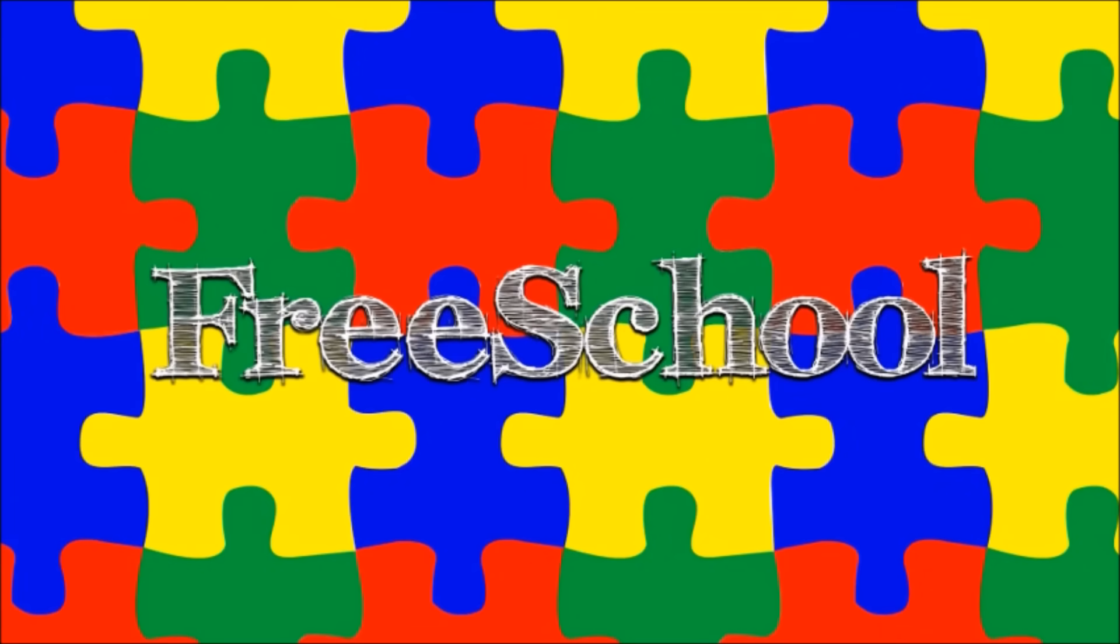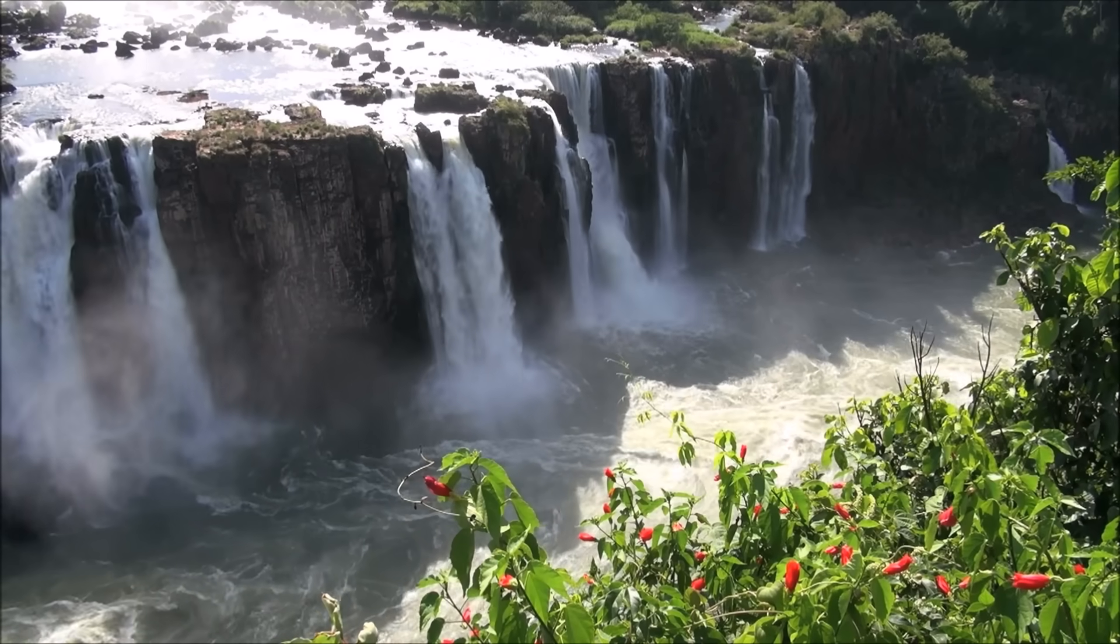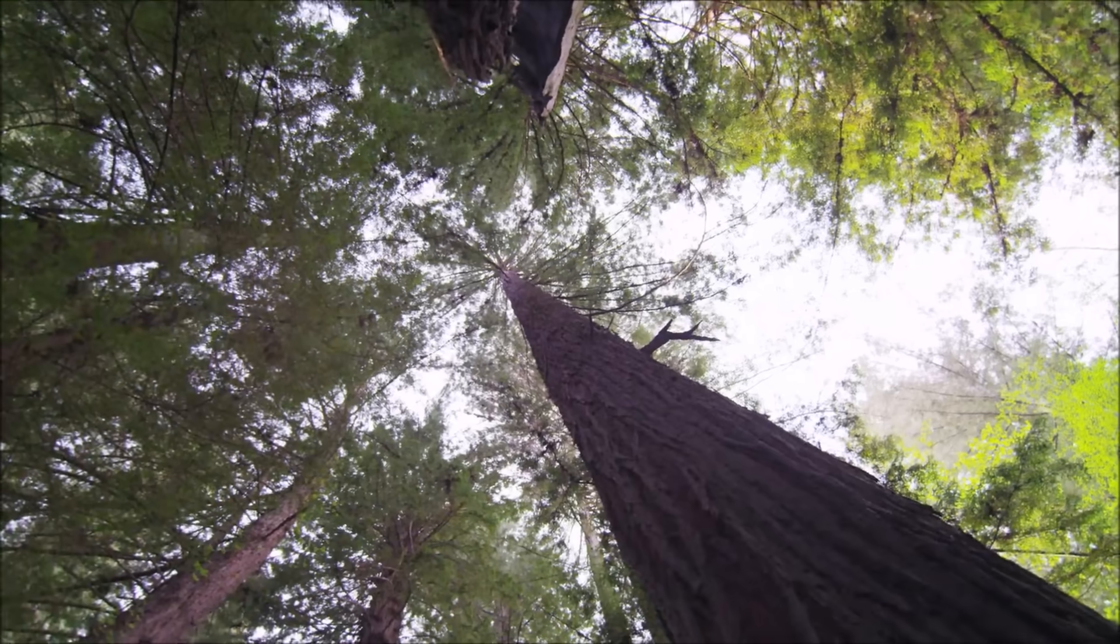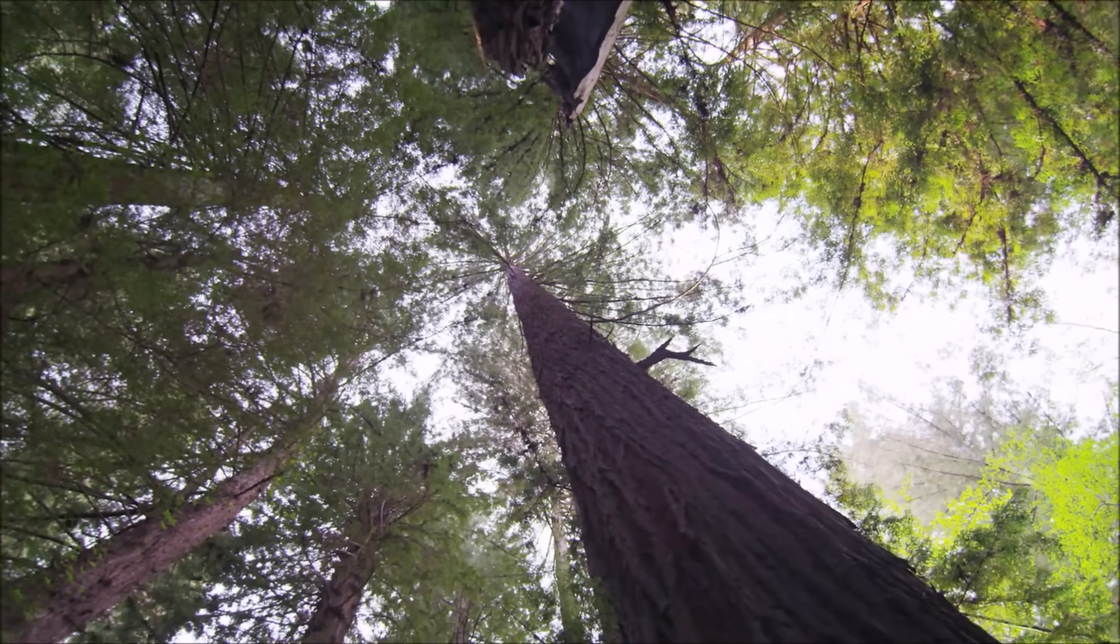You're watching FreeSchool! All living things on Earth, from the tiniest creatures to the tallest of trees, are made of microscopic parts called cells.